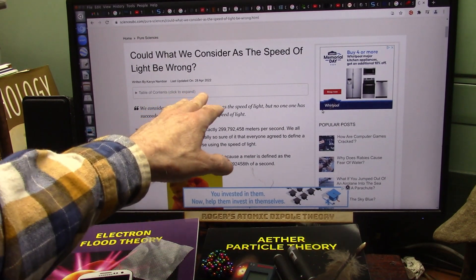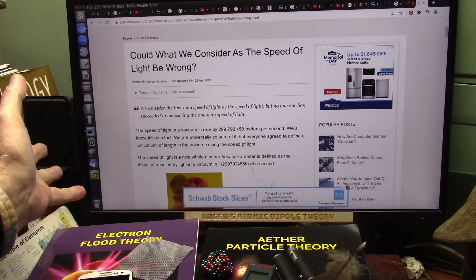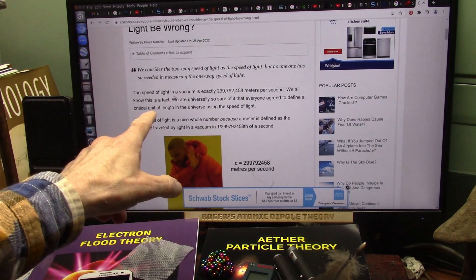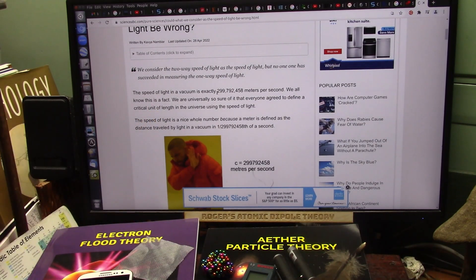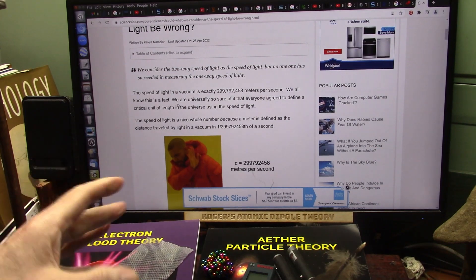All right, this is an article from about a year ago from a science magazine, and they're talking about the speed of light. The speed of light in a vacuum is exactly this number of meters per second. We all know this is a fact.